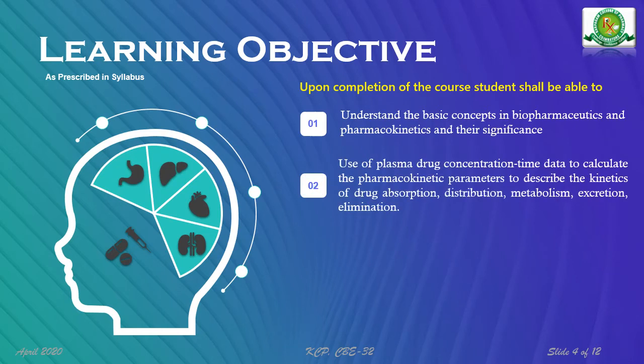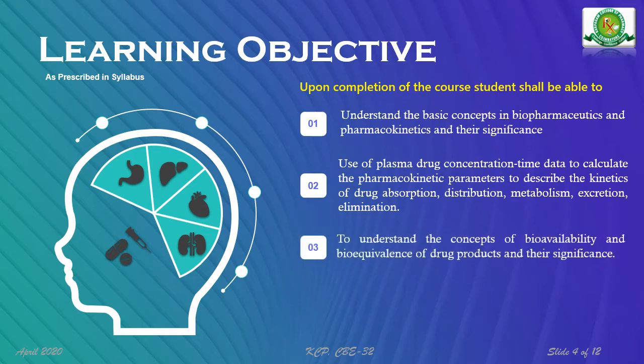The second objective is to use plasma concentration-time data profiles to calculate the pharmacokinetic parameters describing the kinetics of drug absorption, distribution, metabolism, excretion, and elimination. The third objective is to understand the concept of bioavailability and bioequivalence of drug products and their significance.